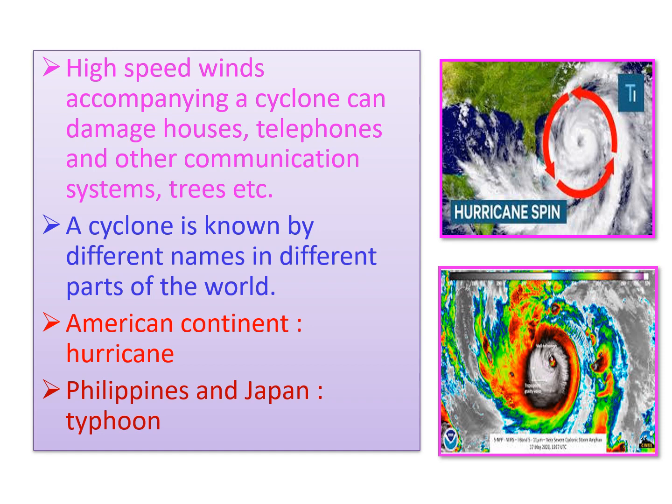These are the different names of cyclones in different parts of the world: American continent — hurricane; Philippines and Japan — typhoon.